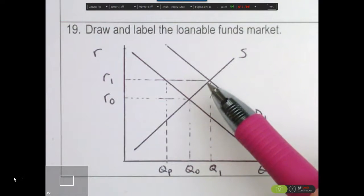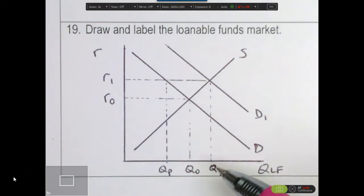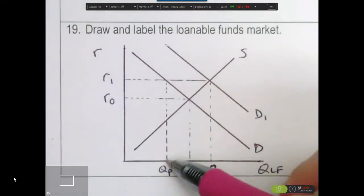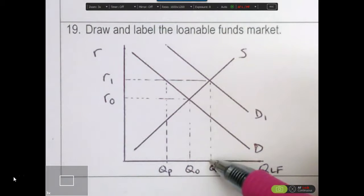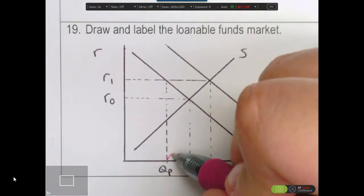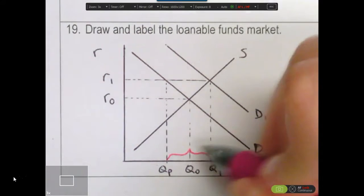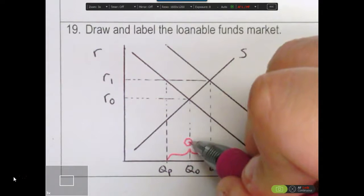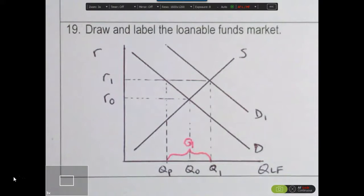So we know that the total amount of borrowing in the market is at Q1. We know that the distance from QP to Q1, this is all government borrowing. Put it as G. That's all government borrowing. We were borrowing at Q0. Now we're borrowing at Q1.